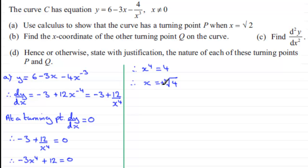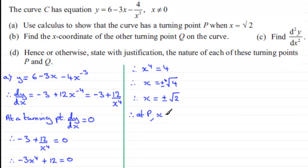The fourth root of 4 equals plus or minus the square root of 2. Since we had to show the curve has a turning point at P where x equals root 2, we can say at P, x equals positive root 2. For part b, finding the x coordinate of the other turning point Q: the other x coordinate must be minus root 2, so at Q, x equals minus root 2.